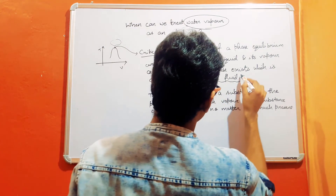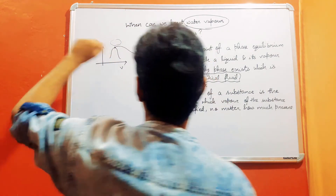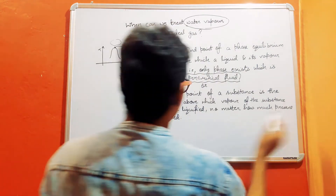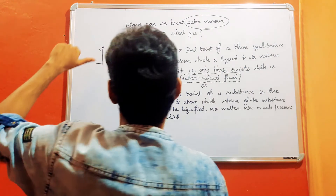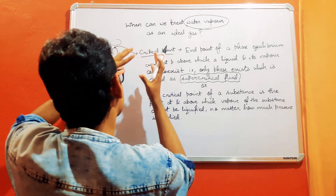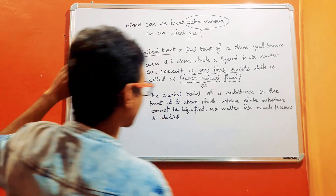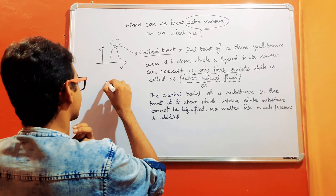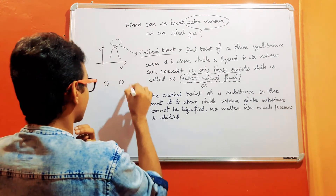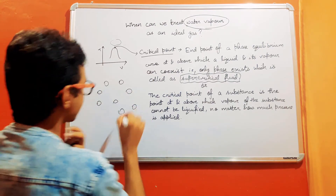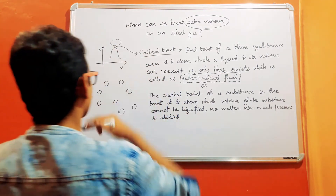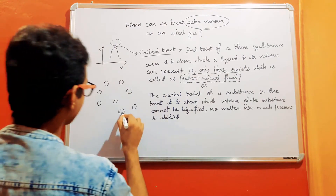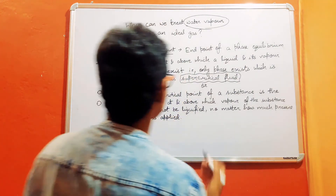There is another way of defining the critical point: it is the point at and above which the vapor of the substance cannot be liquefied. We cannot convert the vapor phase back into the liquid phase at and above this point, because the high temperature causes molecules to be farther apart with such high kinetic energy that no amount of applied pressure will bring them into the liquid state.